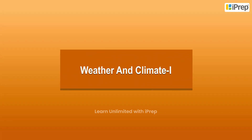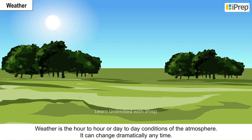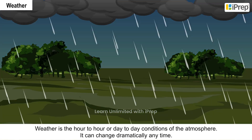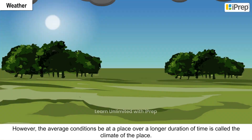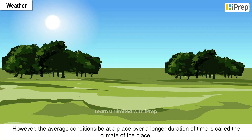Weather and climate. Weather is the hour-to-hour or day-to-day condition of the atmosphere; it can change dramatically anytime. However, the average conditions at a place over a longer duration of time is called the climate of the place.